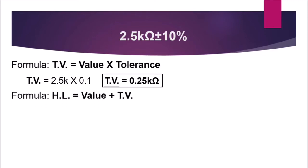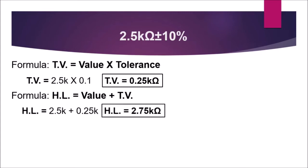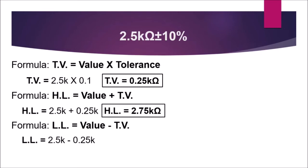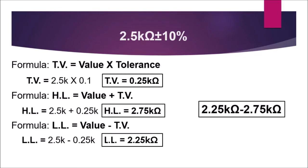The higher limit is equal to the value plus the tolerance value: 2.5k plus 0.25k gives us 2.75 kilo-ohms. For the lower limit, the formula is value minus tolerance value: 2.5k minus 0.25k gives us 2.25 kilo-ohms. So the lower limit is 2.25 kilo-ohms and the higher limit is 2.75 kilo-ohms.